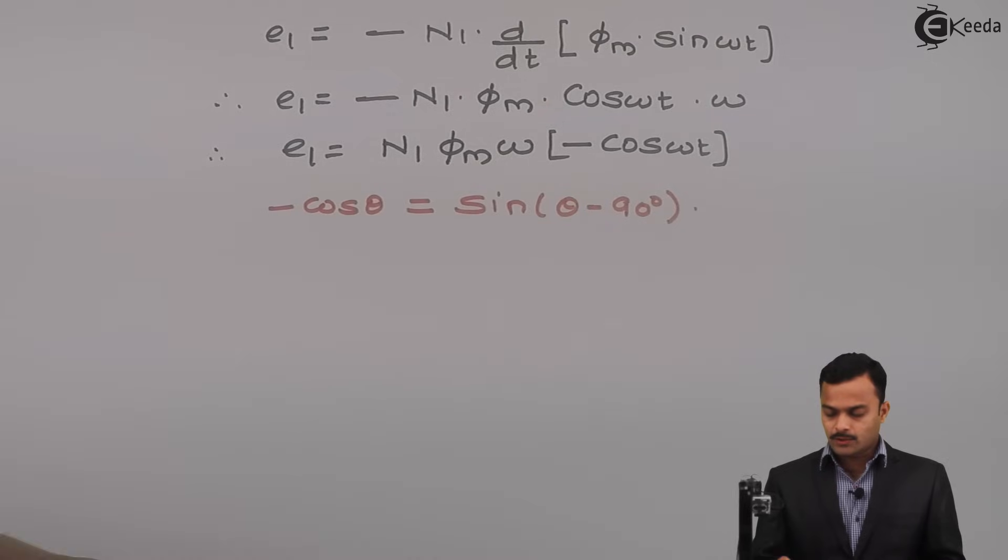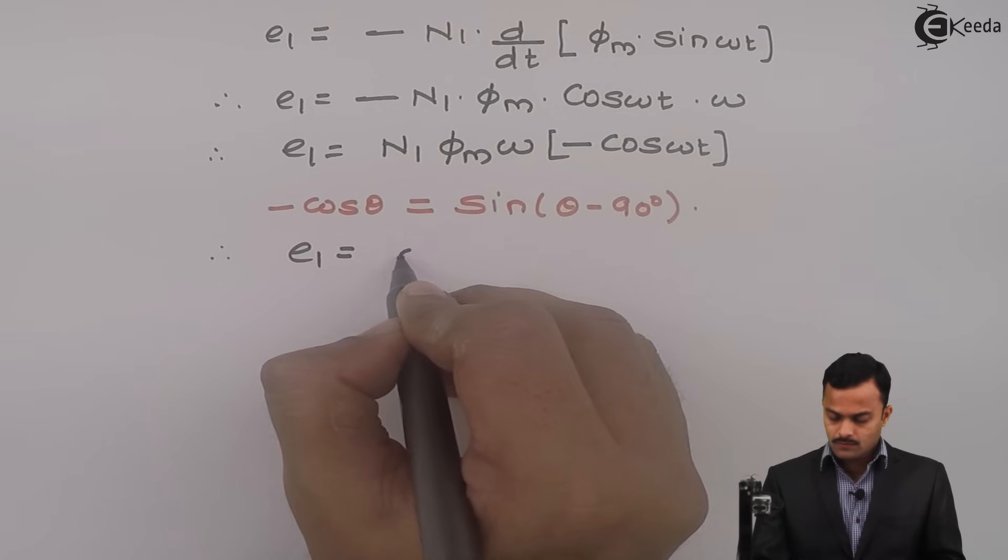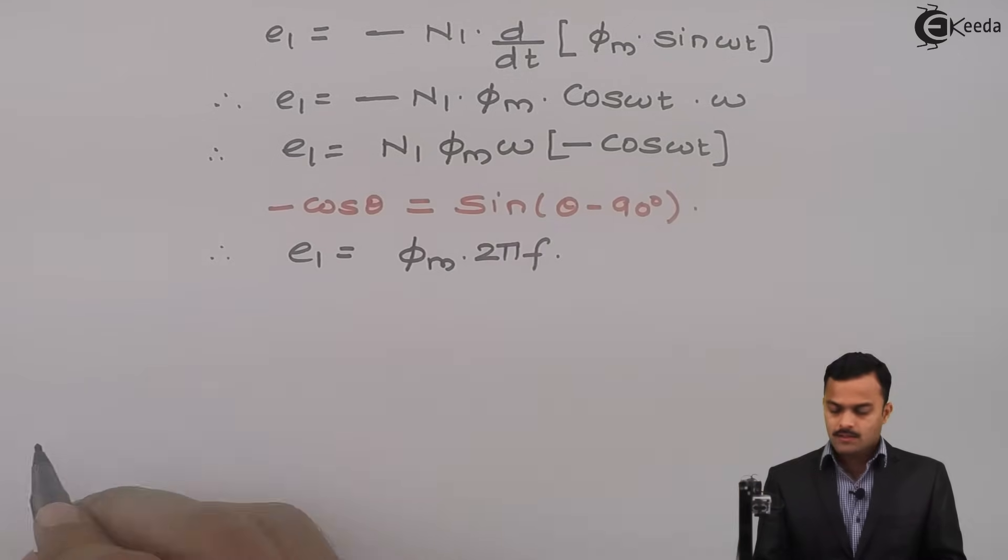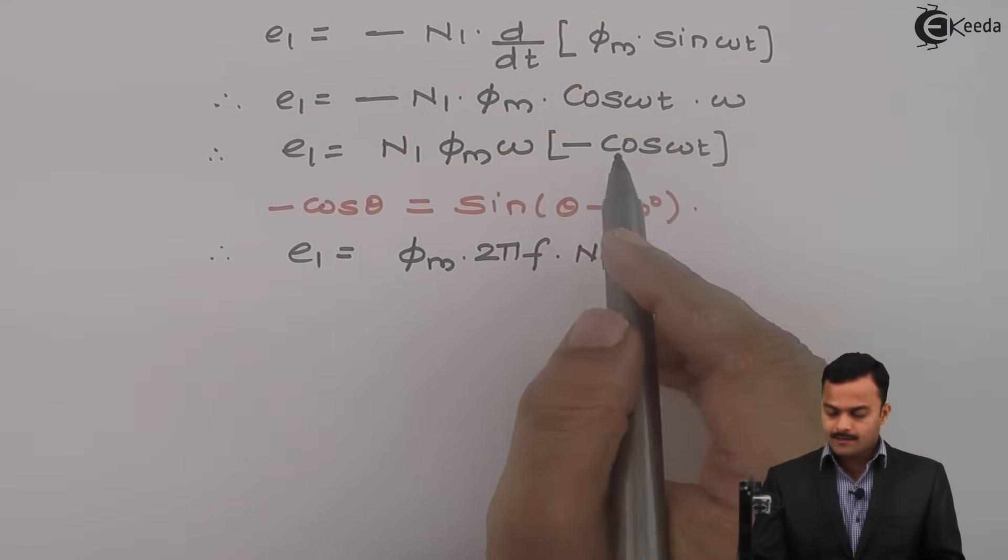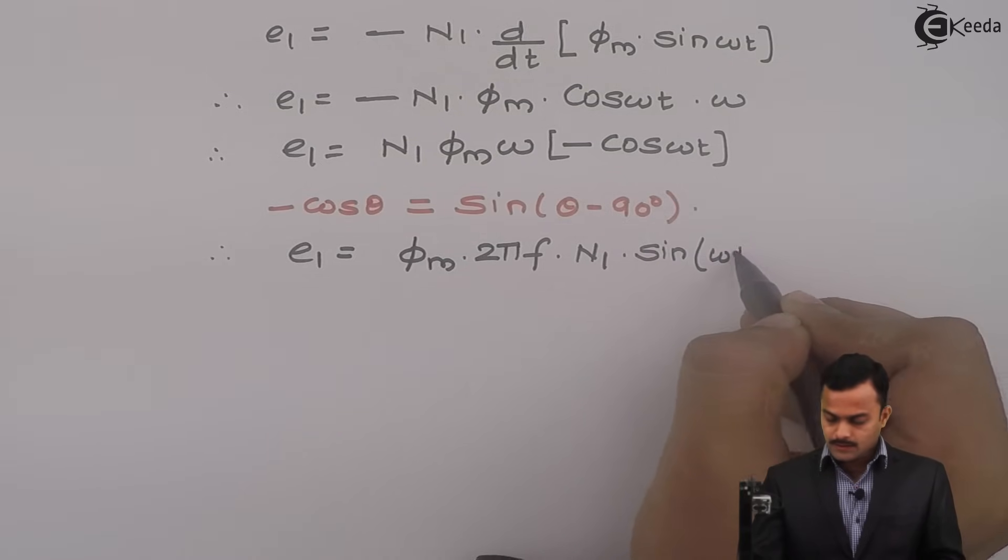Theta means omega t over here. So E1 equal to phi m omega is 2 pi f multiplied by n1, and minus cos omega t, I can write sin omega t minus 90 degree.